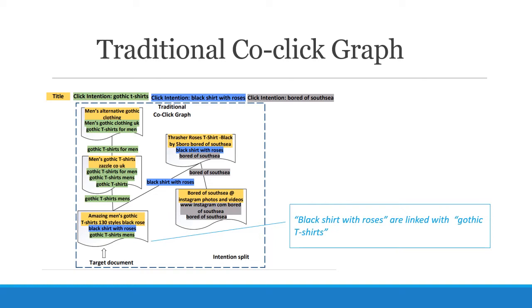However, if a user searches 't-shirt with roses,' although the target document is one perfect match result for this query, the neighbor documents connected to it through click 'gothic t-shirts mens' will only provide irrelevant information. Moreover, this multi-intention noise will rapidly enlarge with the expansion of the neighbor's hop. All these irrelevant neighbor information will do harm to the semantic encoding.